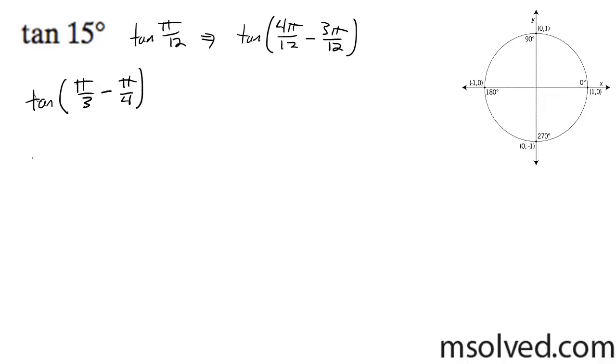So now what we're going to do is, this is the same thing as doing tangent of π over 3 minus the tangent of π over 4, all over 1 plus the tangent of π over 3 times the tangent of π over 4.